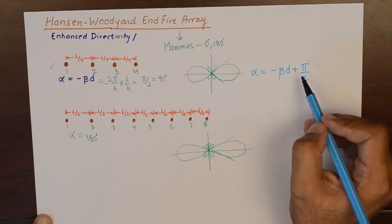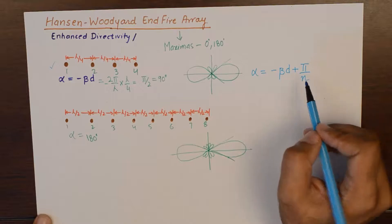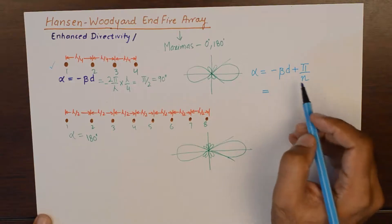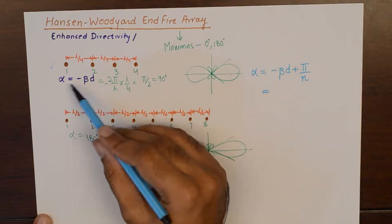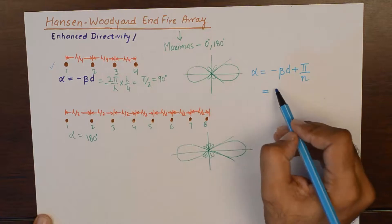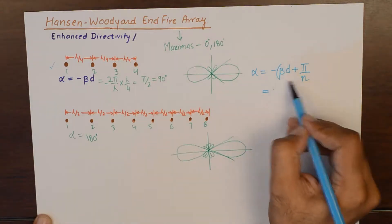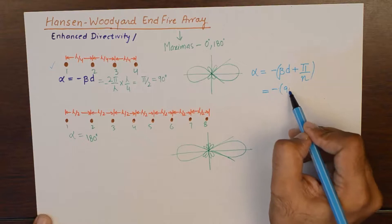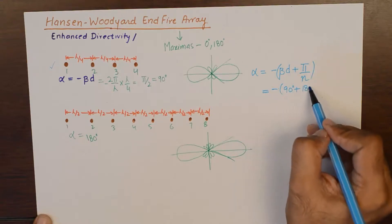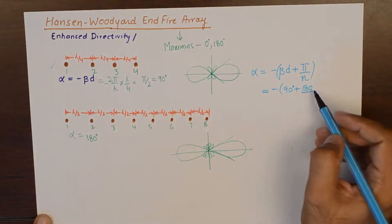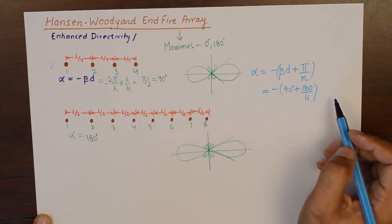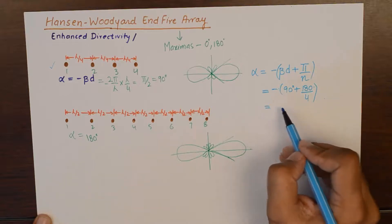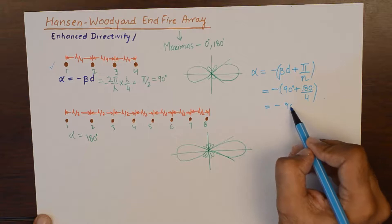So, a small amount of phase shift is added at each step which is equivalent to, in our case, it should be equivalent to, we calculated beta d as 90 degrees plus an additional phase shift of 180 degrees by 4. Which is minus 90 plus 45.